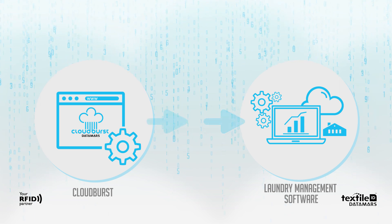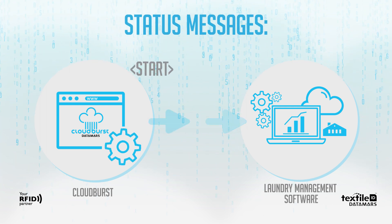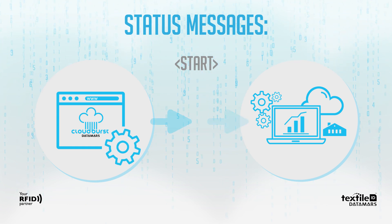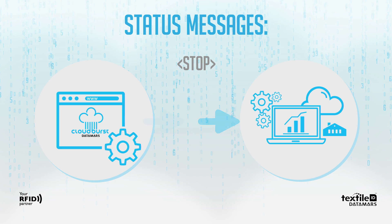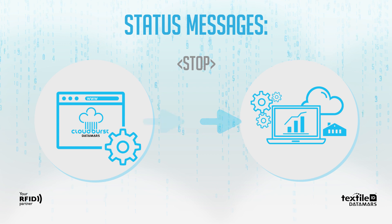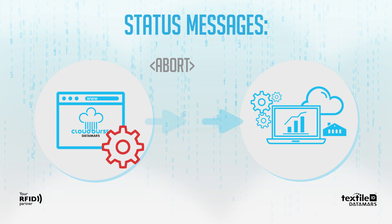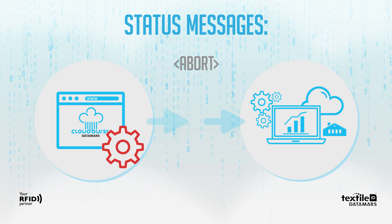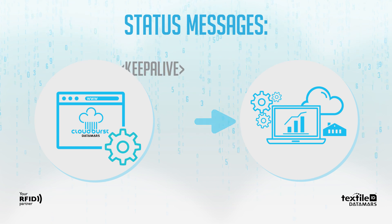To facilitate integration of the RFID reading system with the upper software layer, CloudBurst allows sending status messages. 'Start' is sent when the reading starts — any following EPC shall be considered part of the current acquisition. 'Stop' is sent when the reading stops; all EPCs from the just-ended acquisition are guaranteed to be sent before this message. 'Abort' is sent when reading has been stopped due to a failure or misuse — EPCs of the current acquisition should be discarded.